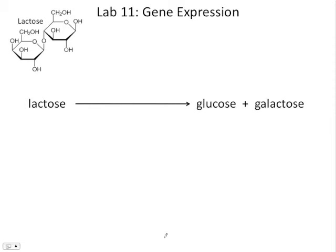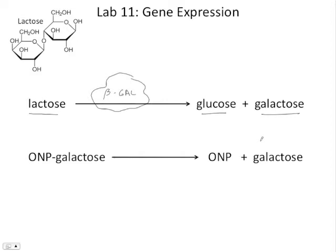So, here's a reaction that takes place inside the cell. Here's lactose, and that bond between the glucose and galactose gets broken, leading to free glucose and free galactose. And this is the reaction that is catalyzed by this enzyme beta-galactosidase. Now in lab, we're going to watch a slightly different reaction taking place. So, in lab, we're going to use this molecule called ONPG, and that stands for O-nitrophenol galactose. And this, the bond between the ONP and the galactose gets broken down to give us ONP and free galactose. And this is also catalyzed by the same enzyme beta-galactosidase.